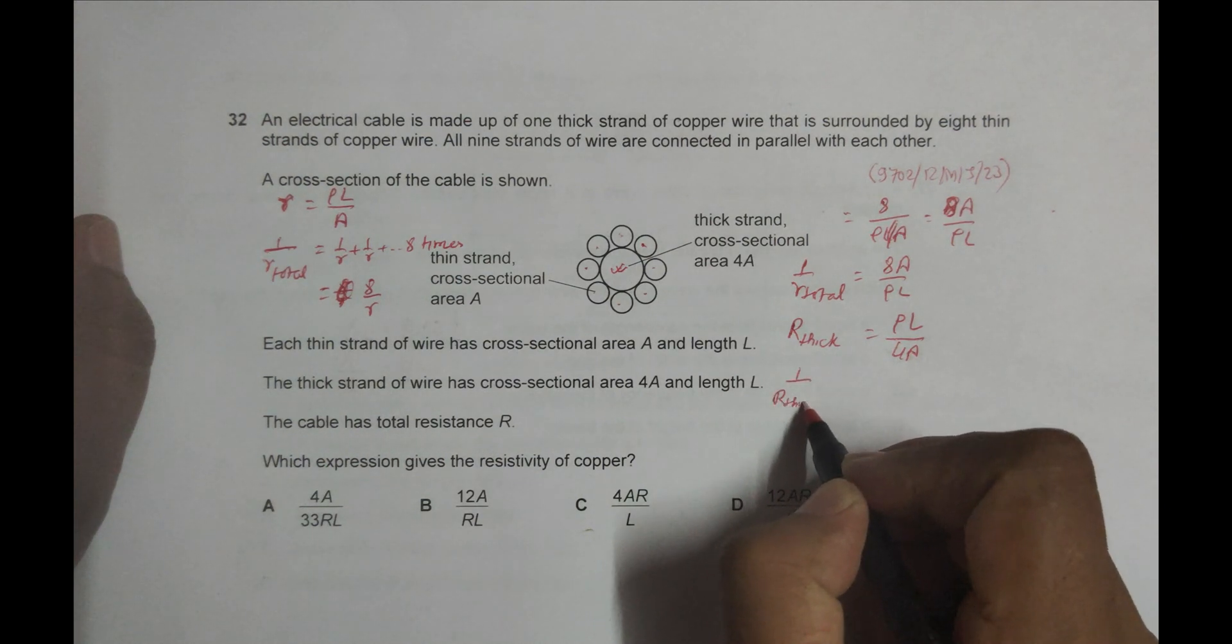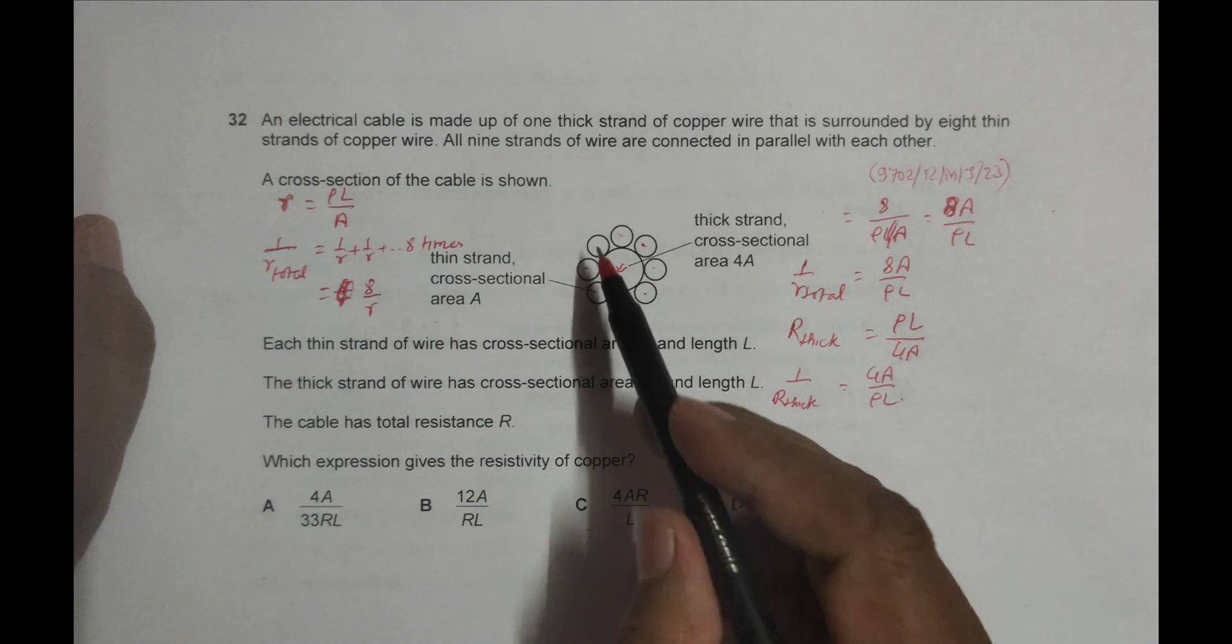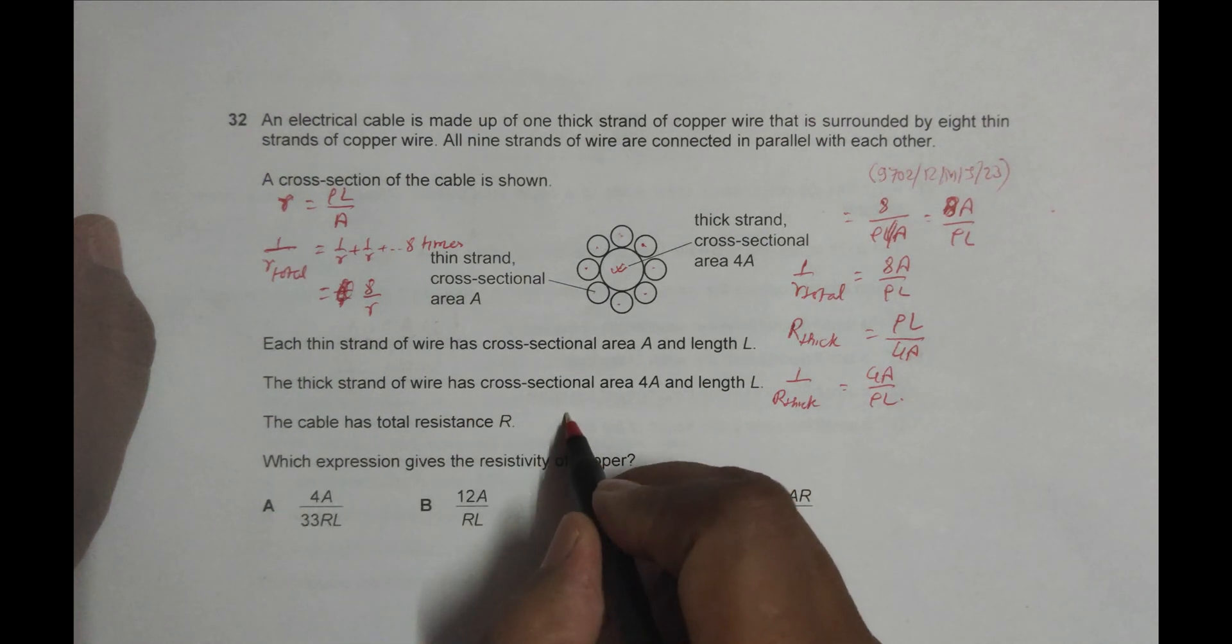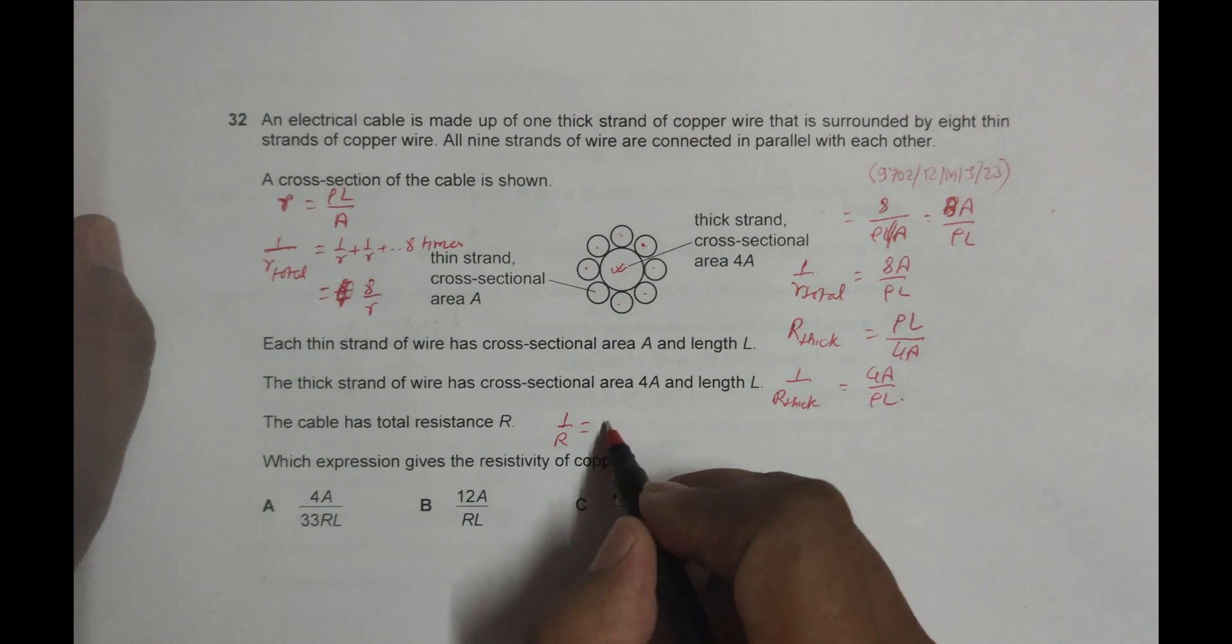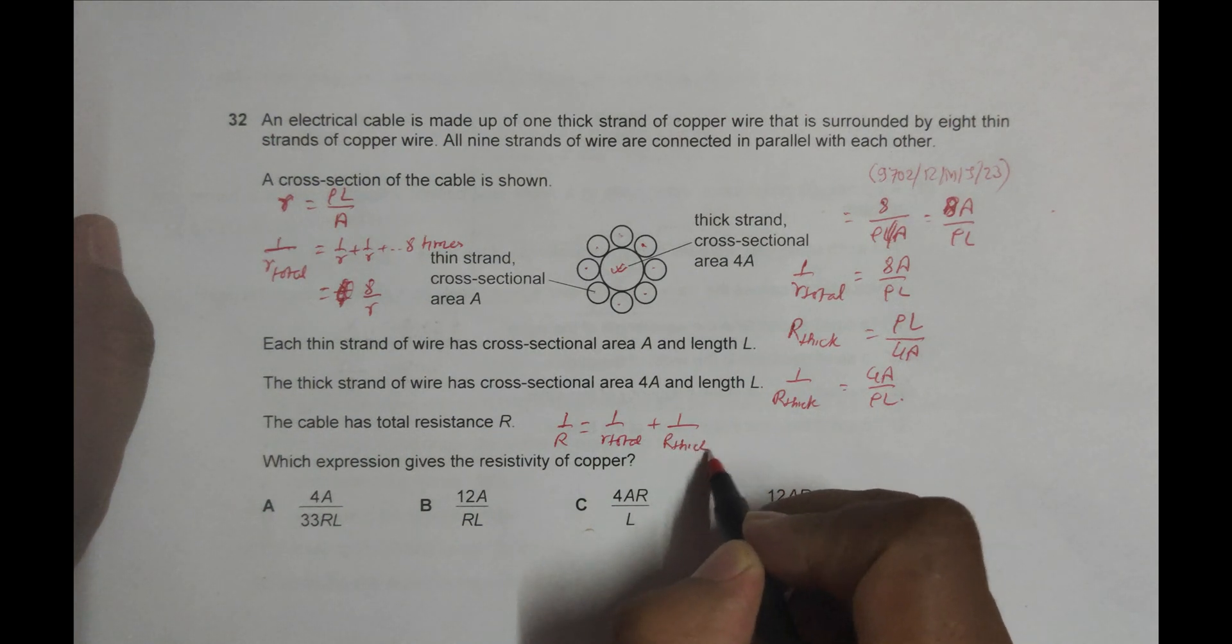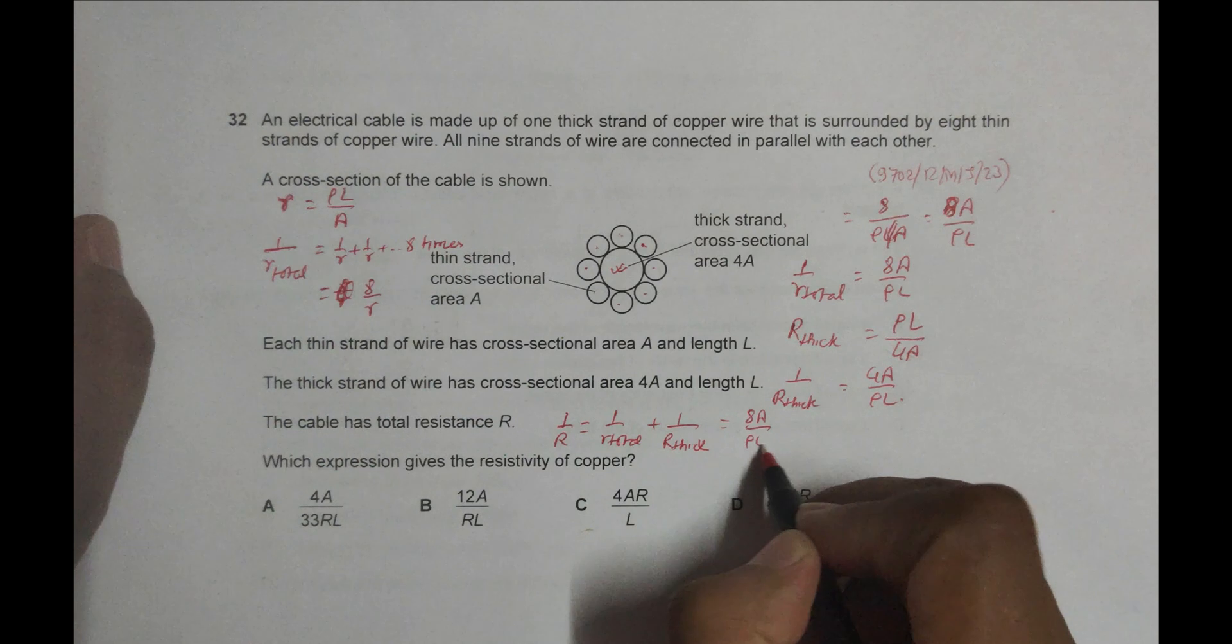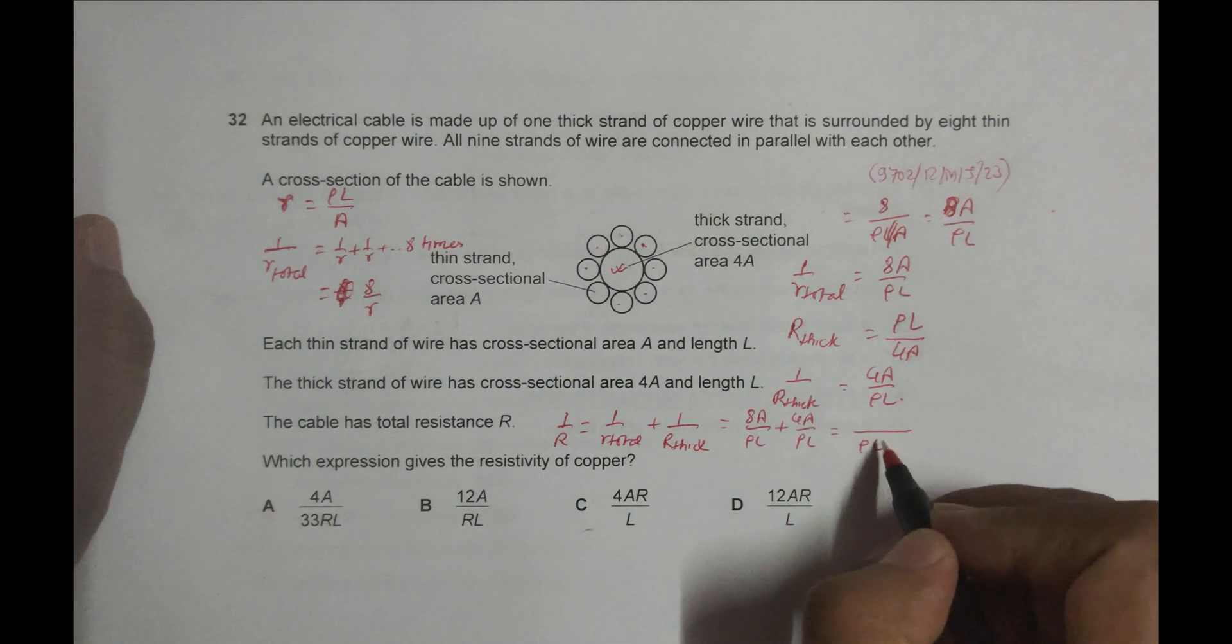Now the total resistance should be equal to R. The cable has a parallel arrangement, so 1/R equals 1/R_total plus 1/R_thick. That's equal to 8A/(ρL) plus 4A/(ρL), which equals 12A/(ρL) with ρL common.